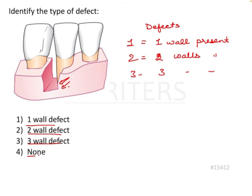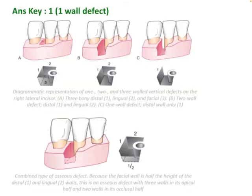Here, as we can see, only one supporting bony wall is present — walls 1, 2, and 3 at the back are missing. So this is an example of a 1-wall defect.